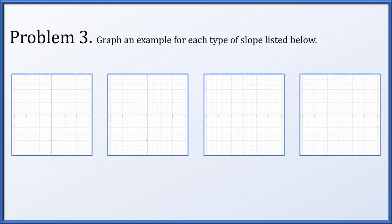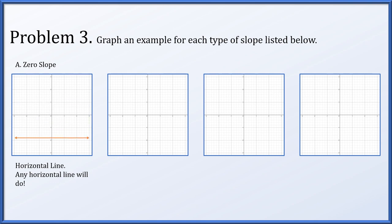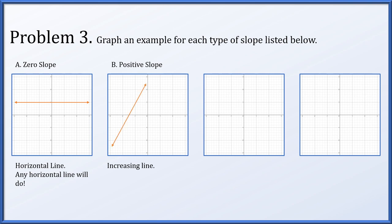In problem three, we're asked to graph an example for each type of slope listed below. First, a line with zero slope is just a horizontal line — any horizontal line would do, you could move it up or down. Next, a line of positive slope means an increasing line; as we move from left to right, the line should go up. Anything that goes up from left to right will be perfectly fine. Third, we're asked to draw a line with undefined slope, meaning a vertical line. Any vertical line will do — it could move left or right as long as it remains perfectly vertical.